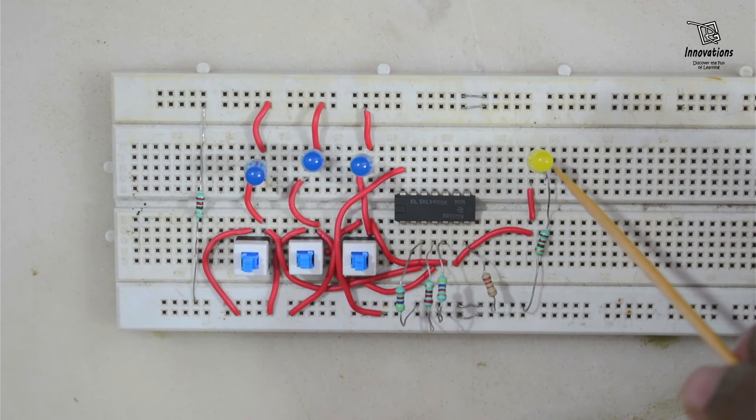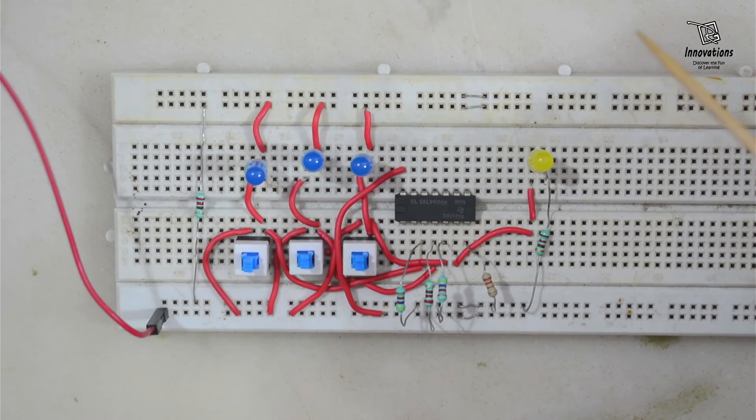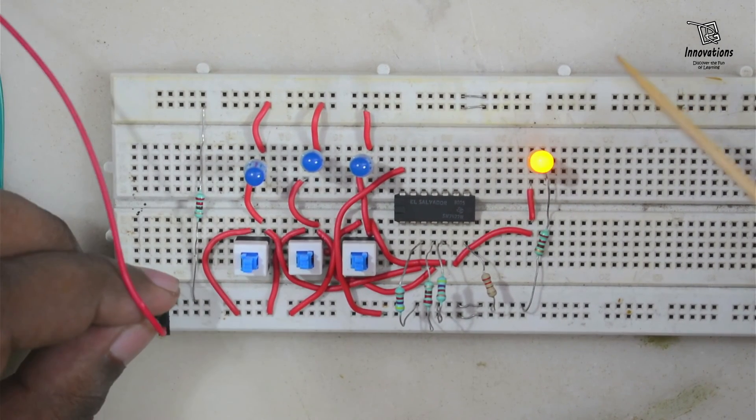Now we will give power supply to this. This will work on 5-volt DC power supply. So we are connecting the positive wire and now connecting the negative wire.